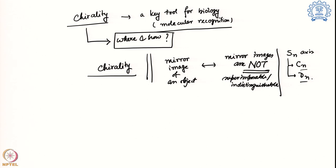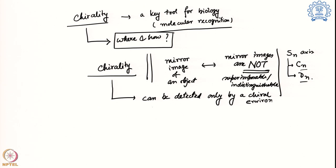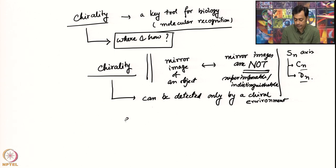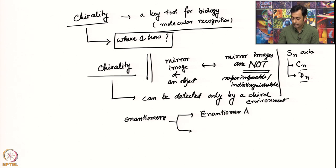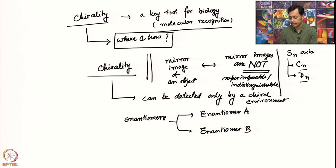We have learned that chirality can be detected only by a chiral environment; otherwise the two mirror images, known as enantiomers, appear identical. If I have two different enantiomers — enantiomer A and enantiomer B — they are very similar molecules; the only thing different is the stereochemistry. They are mirror images of each other, not superimposable or indistinguishable.